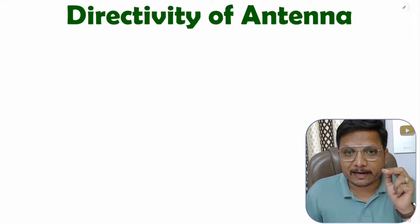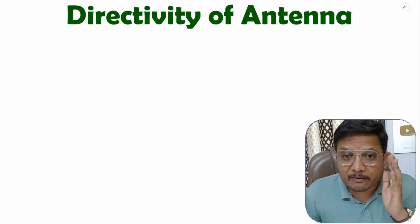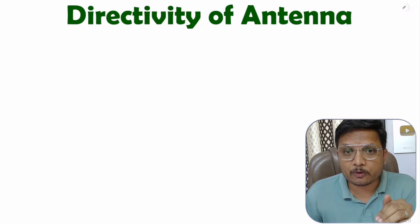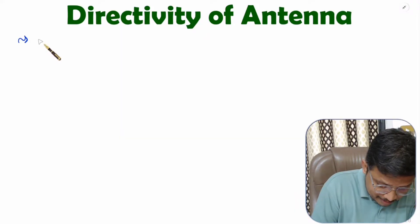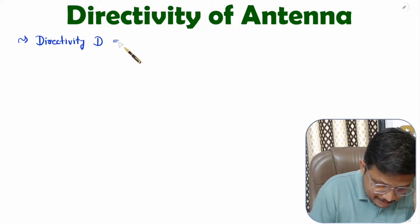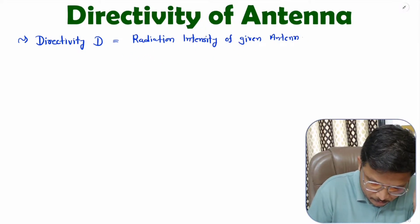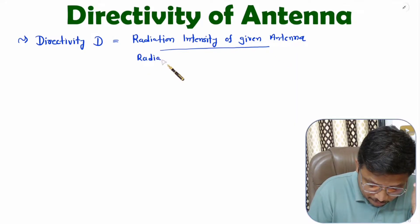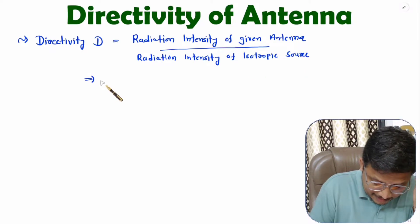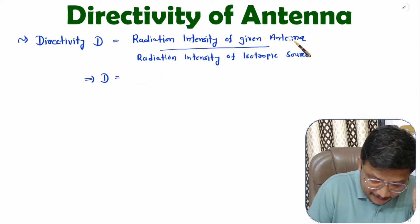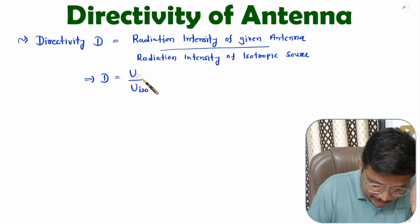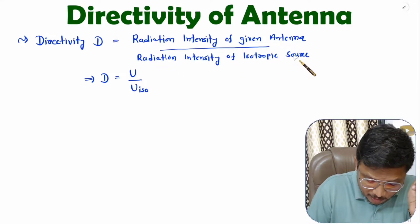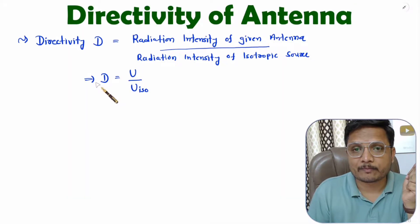Directivity of antenna is the radiation intensity of a given antenna in a given direction with respect to the radiation intensity of an isotropic source. So if you want to calculate directivity D, that is radiation intensity of the given antenna — let's call it U — divided by radiation intensity of the isotropic source, let's call that U_iso.